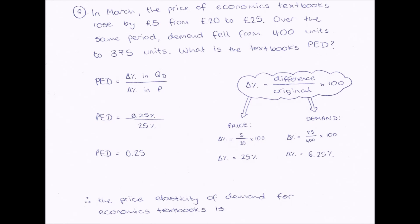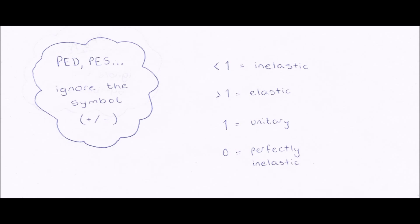But what does this actually mean? Does this mean our economics textbooks are price elastic or price inelastic? This diagram shows what our price elasticity of demand number actually represents. If our PED number is less than 1, our good is inelastic — demand doesn't change that much. If it is greater than 1, our good is elastic — demand does change a lot. If our PED number is exactly 1, we have a good which is unitary in price elasticity, meaning the percentage change in demand will be exactly the same as the percentage change in price.